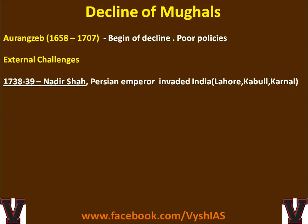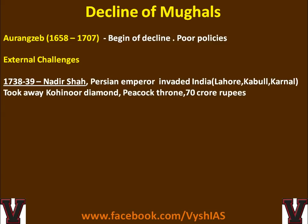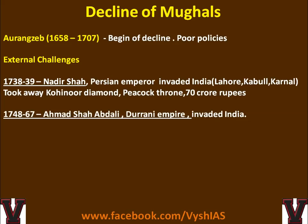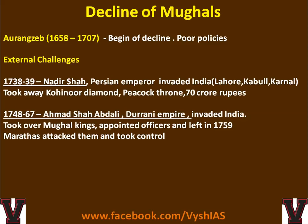In terms of external challenges, 1739 is when Nadir Shah of the Persian (Iranian) Empire invaded India. He took over Lahore, Kabul, and Karnal, and he is the one who took away the Kohinoor diamond, the Peacock Throne, and 70 crore rupees as per historical records — a massive amount compared to modern-day values. Similarly, the Durrani Empire in Afghanistan, founded by Ahmad Shah Abdali, also invaded India after the 1748–1750s and contributed to the decline of the Mughals.